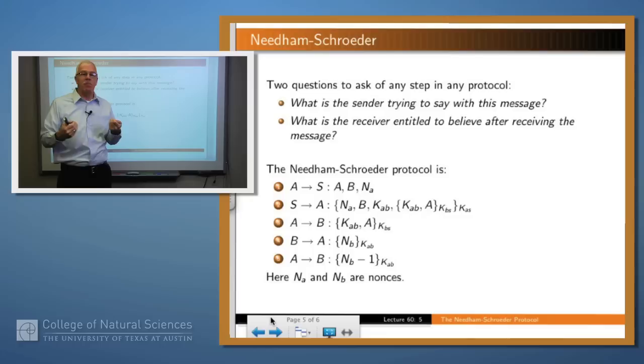Notice what's in the message. First of all, the message is encrypted with K, A, S, which means that nobody but A and S can decrypt this thing because they're the only ones with this key. So S includes the nonce, and that tells A that the message is fresh. It includes B's identity. It includes the key, and it also includes this additional piece of information, which is encrypted with K, B, S. Now, notice that A can't look inside that. It doesn't have K, B, S, but it knows what to do with it. It's going to send that on to B.